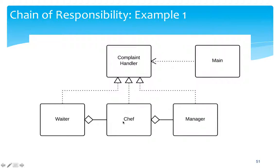In the first example, the client issues a complaint as a request. The chain of responsibility is set in a restaurant as follows: the waiter first receives the complaint. If he or she can handle it, they do; otherwise it is forwarded to the chef and then the manager. This is a chain of responsibility.